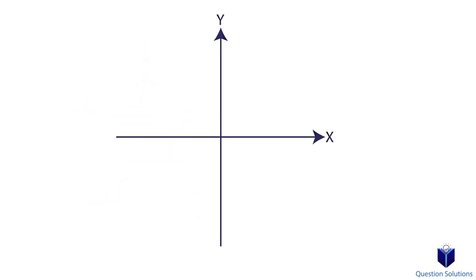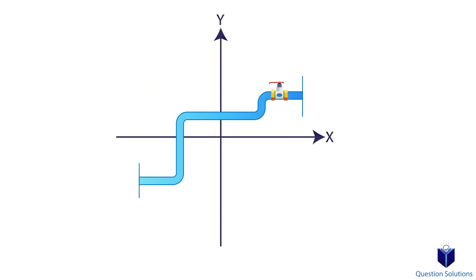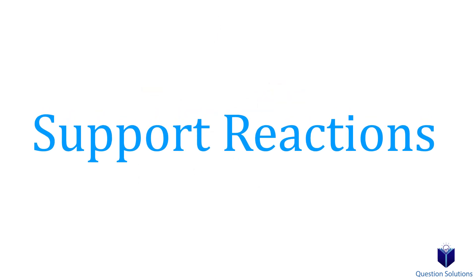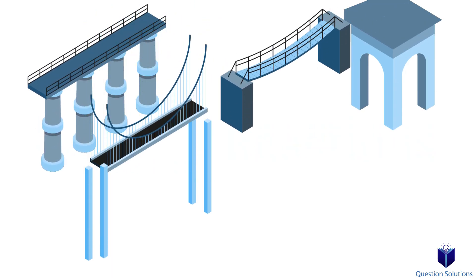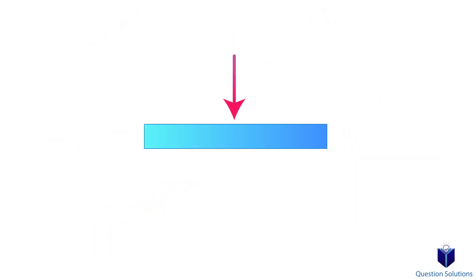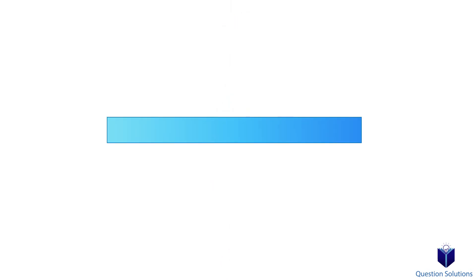Today we're going to look at just two-dimensional problems, so just objects in the xy plane. When we look at an object, we need to look at something called support reactions. These reactions at the supports are the forces and couple moments that keep an object from moving. They create opposite forces and moments so that an object doesn't translate or rotate. So in our flowerpot example, the rope is a support reaction — it creates the tension which keeps the flowerpot from falling.